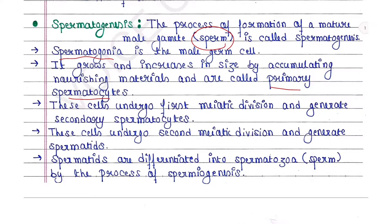These secondary spermatocytes undergo second meiotic division and generate spermatids. Spermatids are then differentiated into spermatozoa, that is sperm, by the process of spermiogenesis.